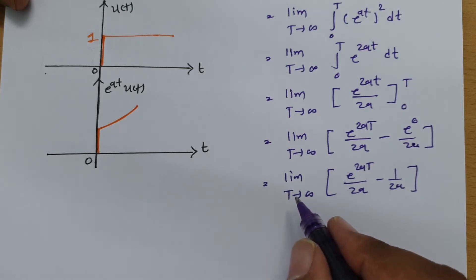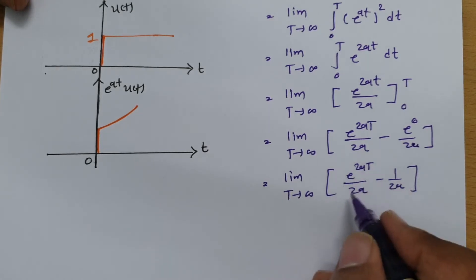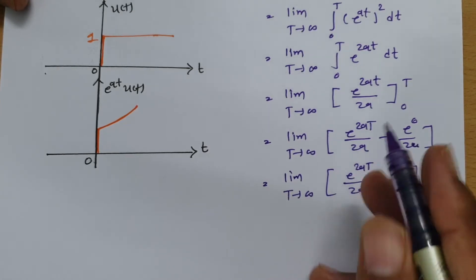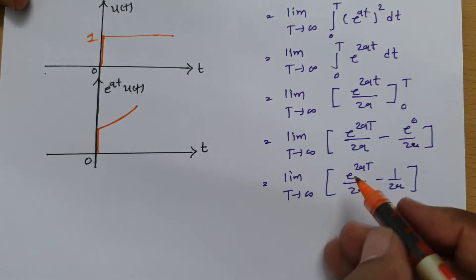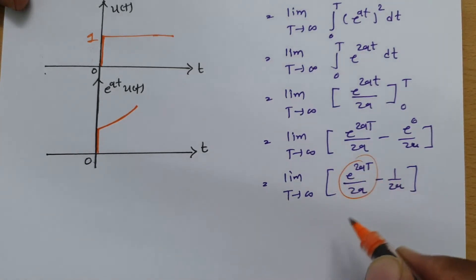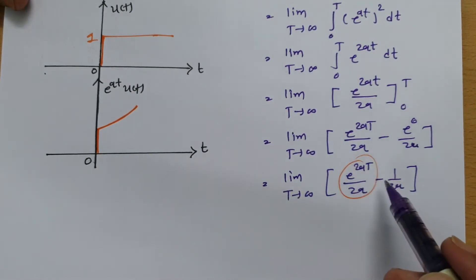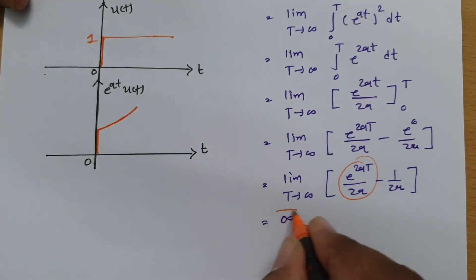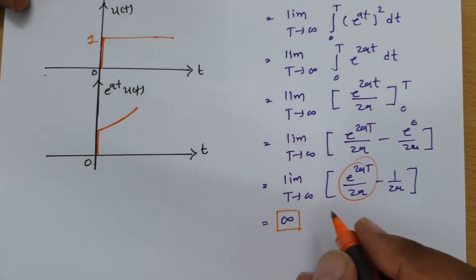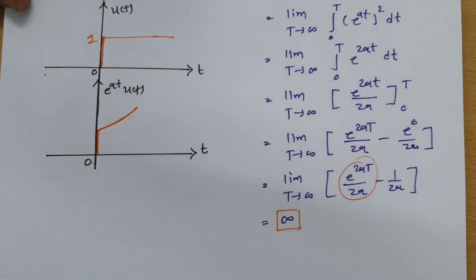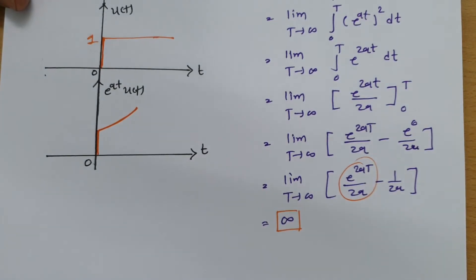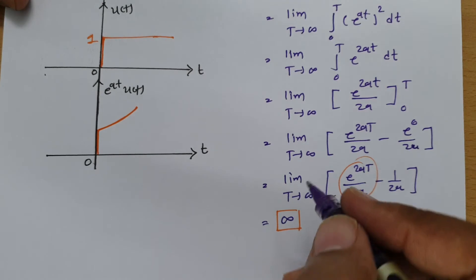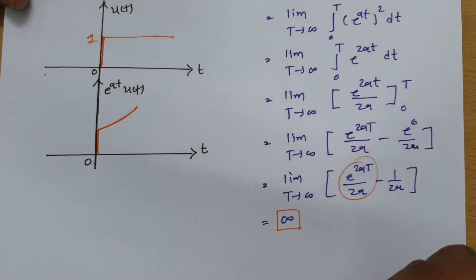If we place the limit T→∞, the term e^(2aT)/(2a) goes to infinity. So this is infinity minus a finite value, which equals infinity. Therefore, the energy of this signal is infinite — it is not an energy signal. So we must calculate power.